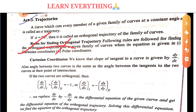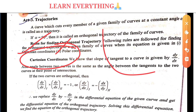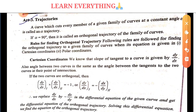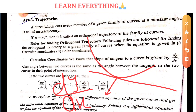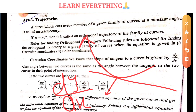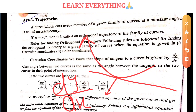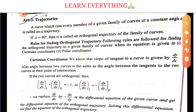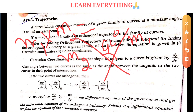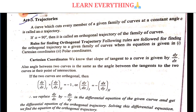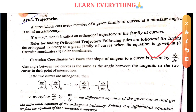We know that the slope of the tangent to the curve is dy/dx. When we have the derivative of any curve, the slope is dy/dx. The slope of the tangent to the curve is dy/dx. Now, if two lines are perpendicular to each other, the product of their slopes m1 and m2 equals minus 1. So when two lines are mutually perpendicular, the product of their slopes is minus 1.